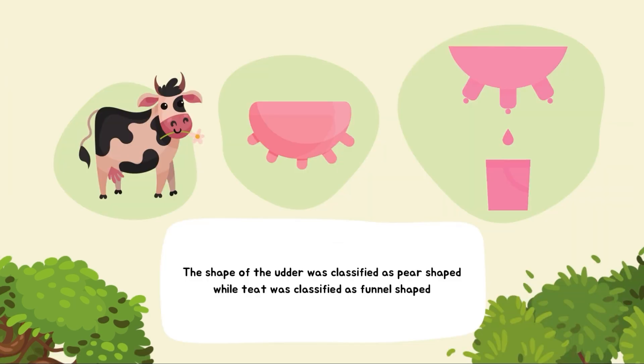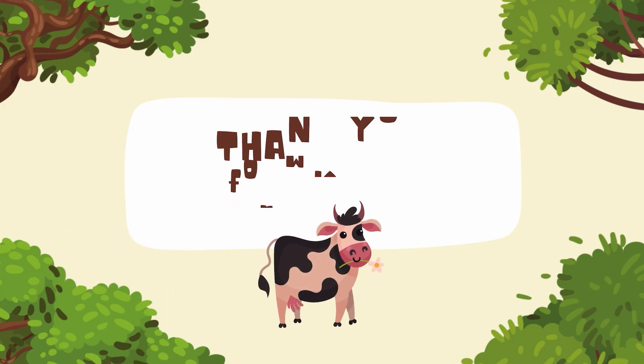The shape of the udder was classified as pear-shaped, globular-shaped, or pendulous-shaped, while teats were classified as funnel-shaped or cylindrical-shaped. And that's it for today. Thank you for watching.